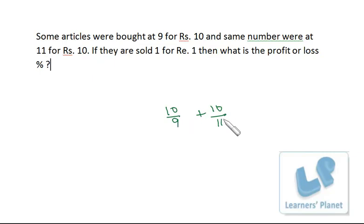This is the total cost price of two pieces, one at this price and one at this price. The selling price is 1 for rupee 1, that means 2 for rupee 2. So this is the total selling price. Now just take LCM: 110 plus 90 that is 200, and this 99 will go away, will go over here.